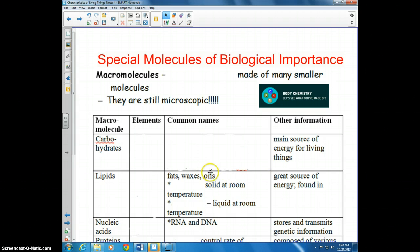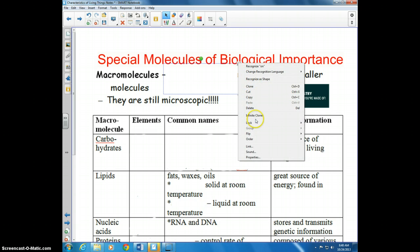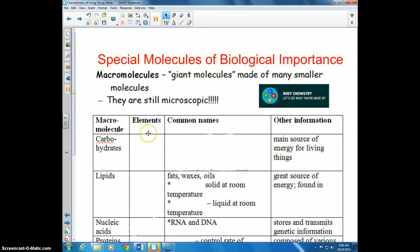There are certain categories of macromolecules, or very large molecules, that are considered very important. Macromolecules are giant molecules made of many smaller molecules. But even though they are macro, which means very large, they are still microscopic, so we would still need a microscope to see them or use a technique to separate them.